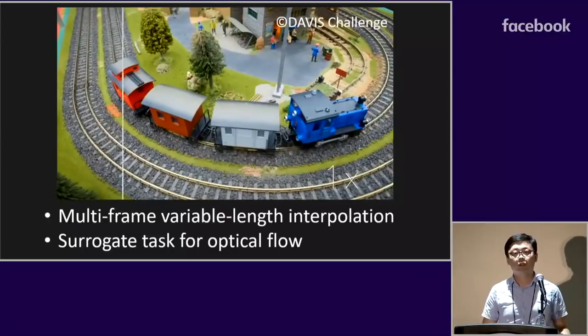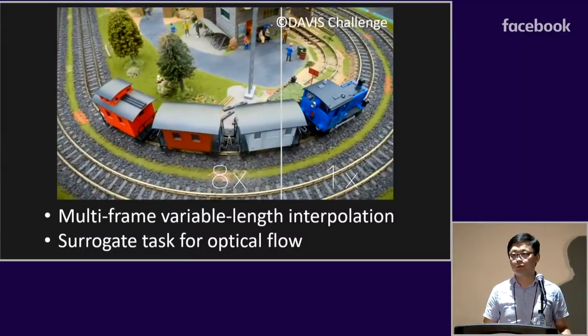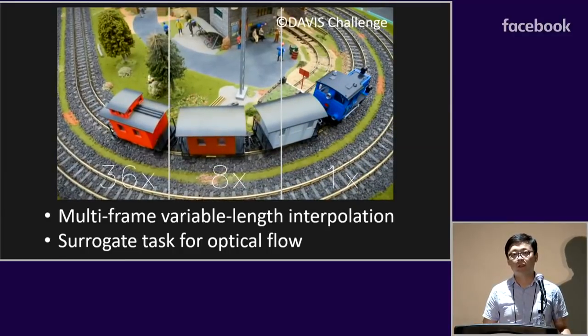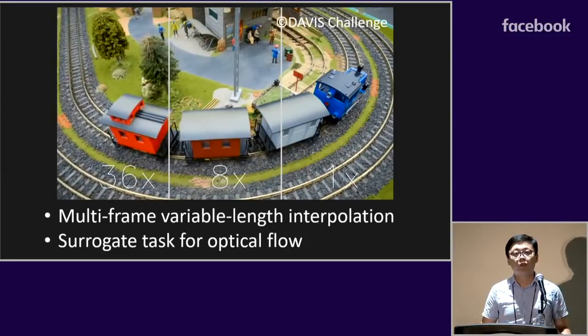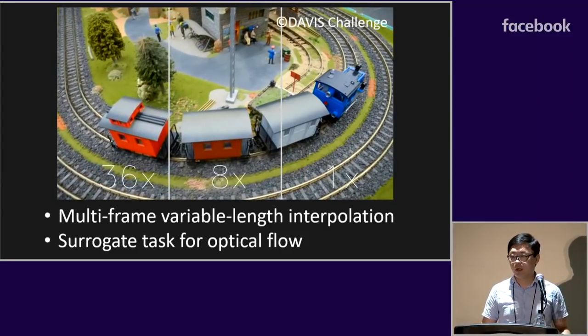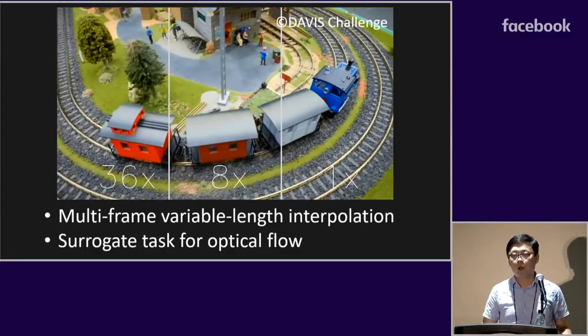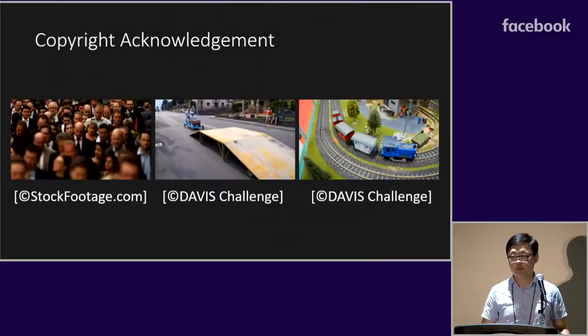To conclude, there are two key messages to take away. First, our approach is able to do multi-frame variable length video interpolation, generating as many intermediate frames as we want. Second, we show video interpolation can serve as a surrogate task for optical flow learning without using ground truth annotations. Welcome to our poster G21 for more technical details and more results. There is also a live demo at NVIDIA's booth that you can play with. Thank you.